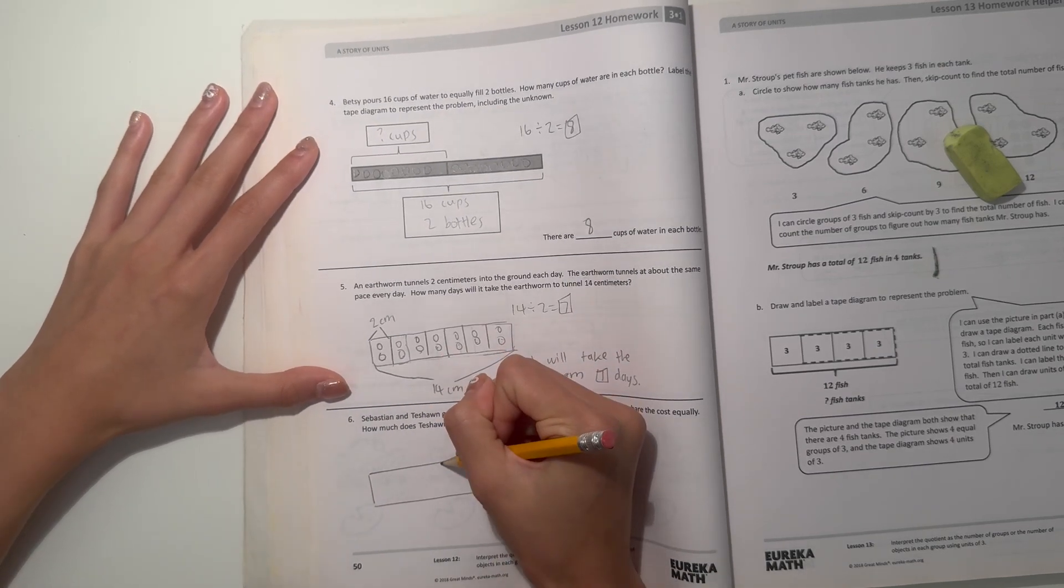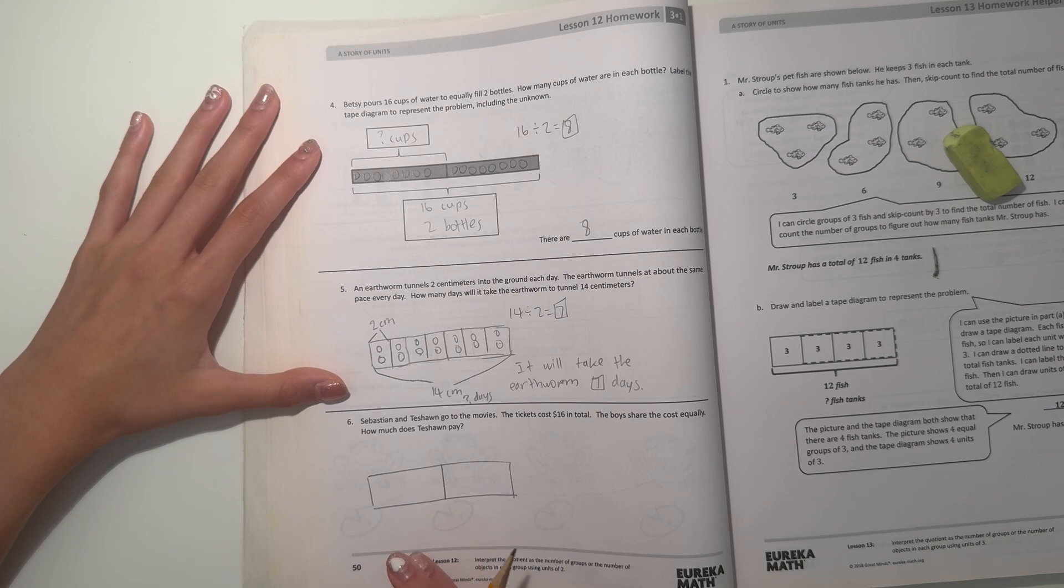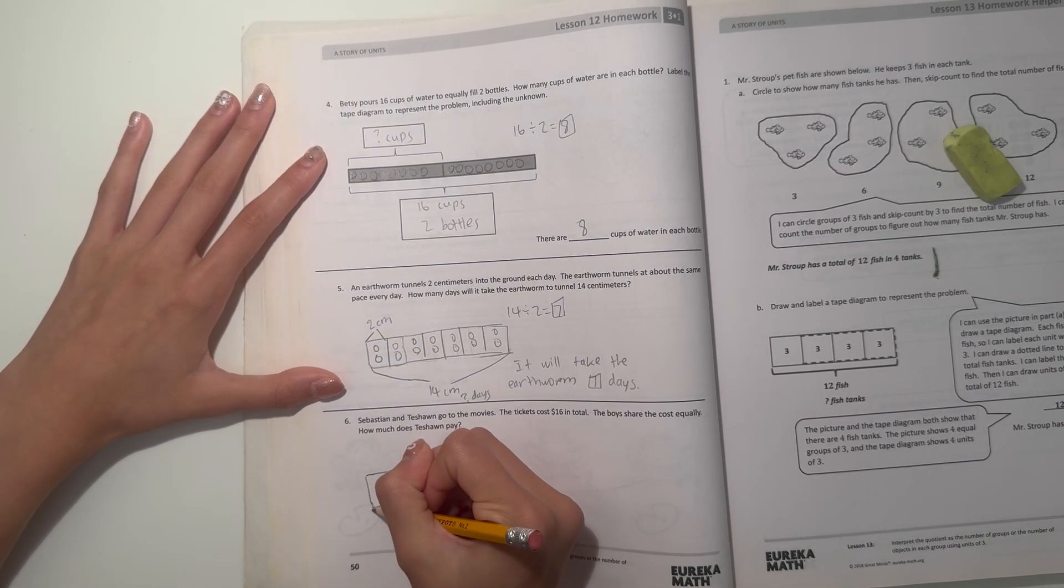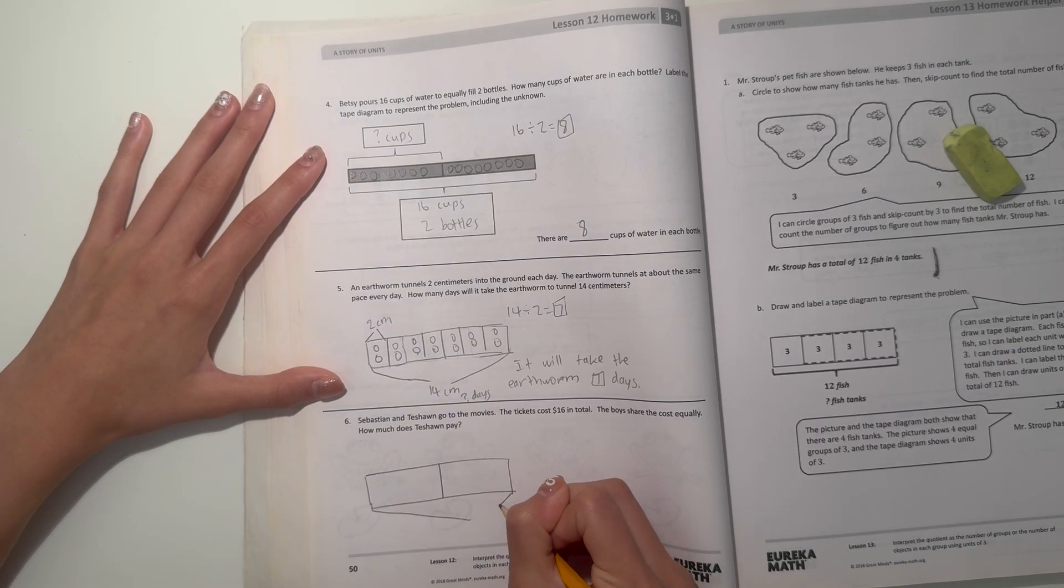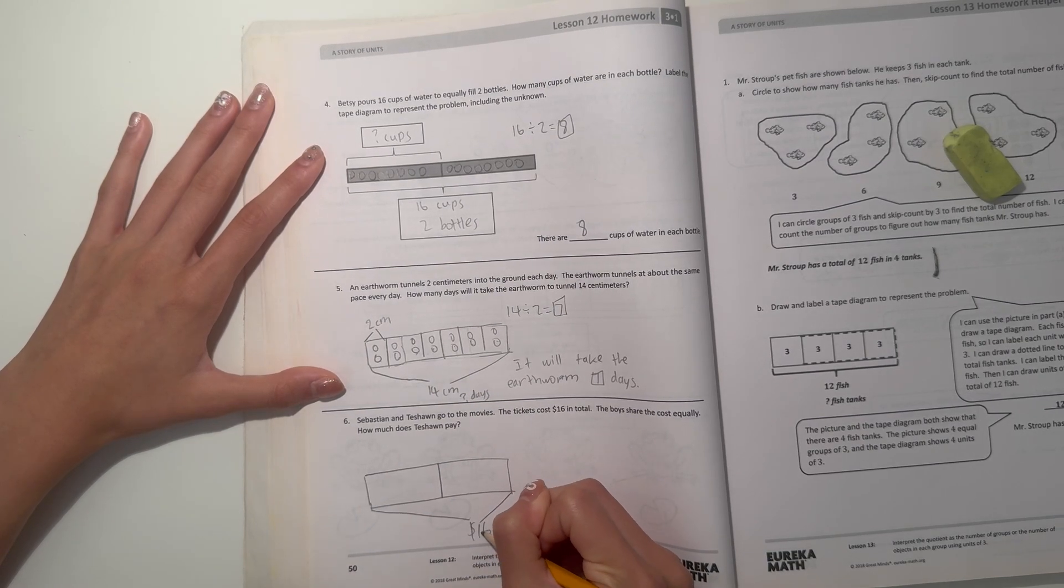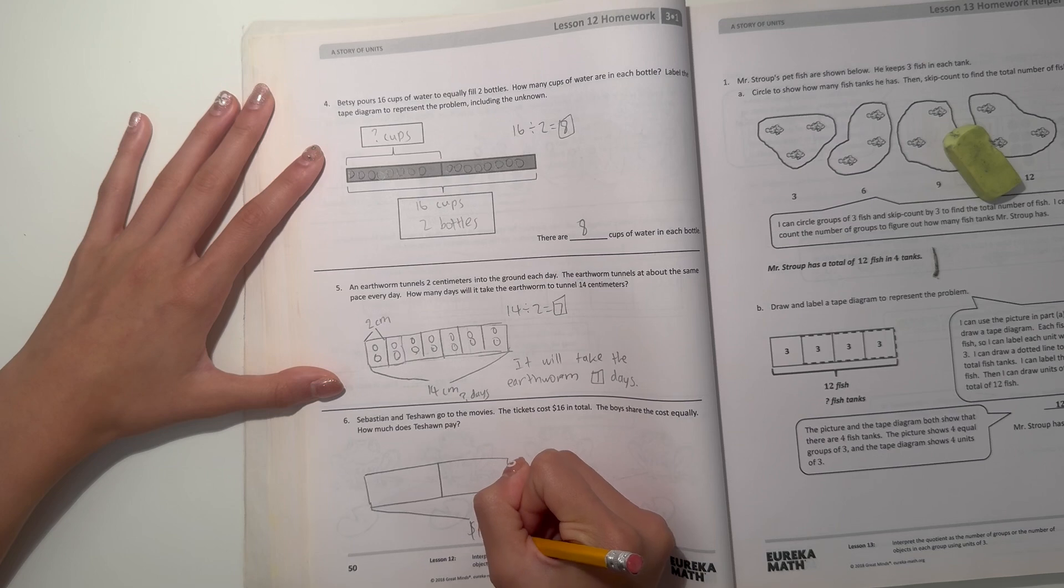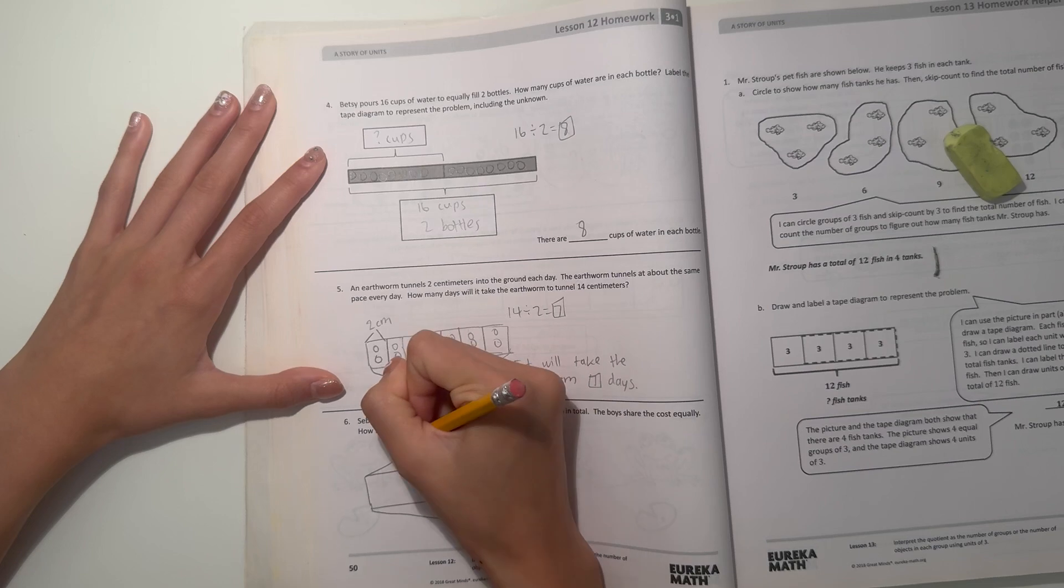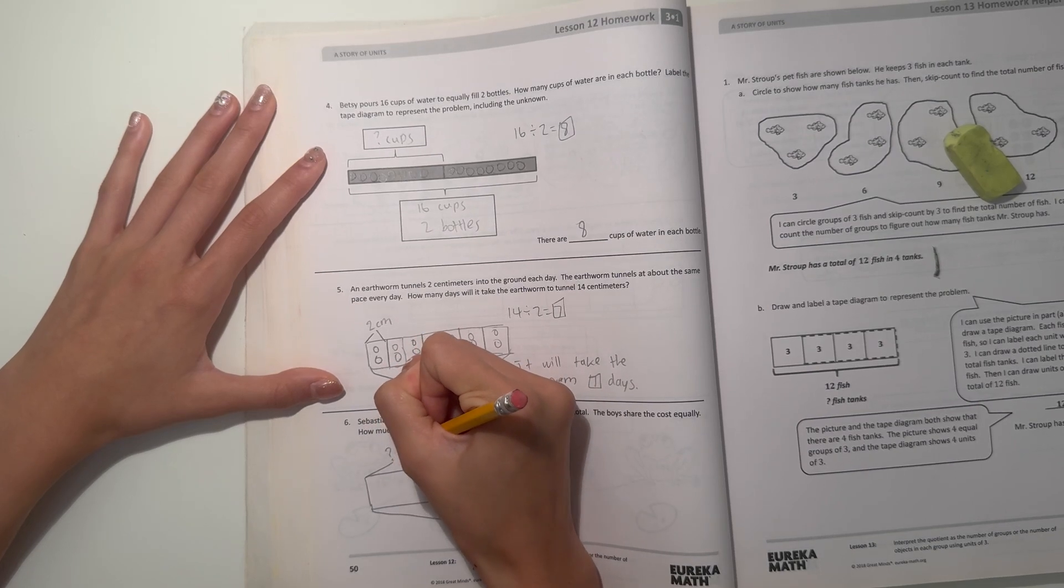So let's separate it in half because there's Sebastian and Tashaun. So what do we know so far? We know the tickets all together cost $16, and there's two boys. So they're sharing the cost in half. So now we have to find out how much are they paying each.